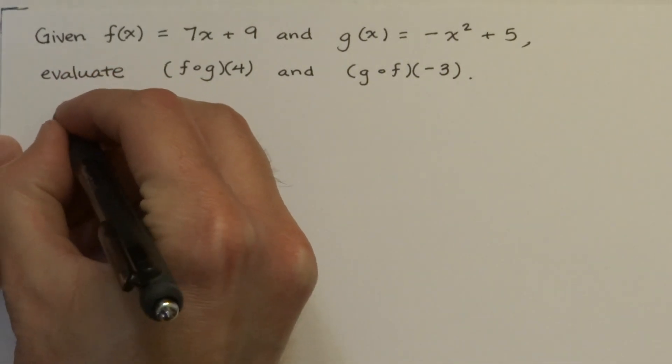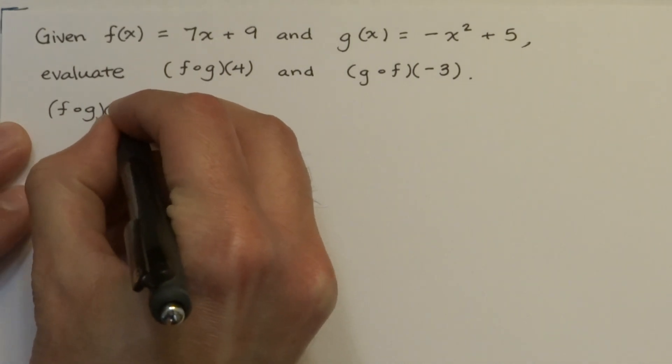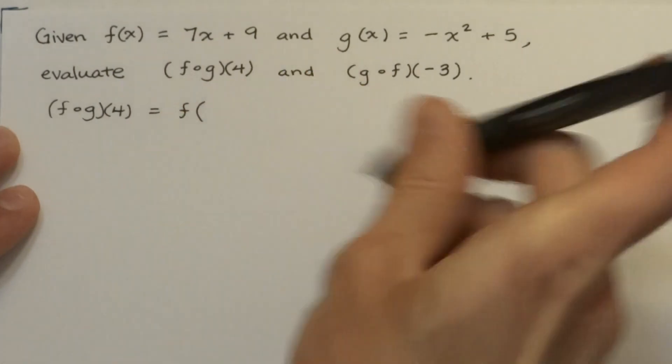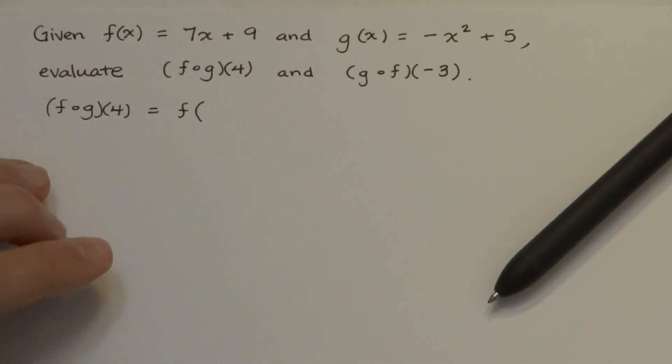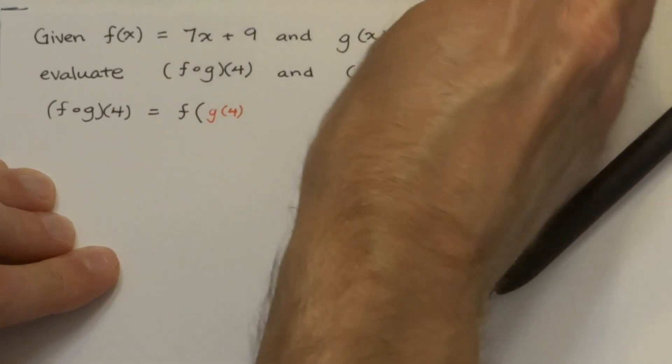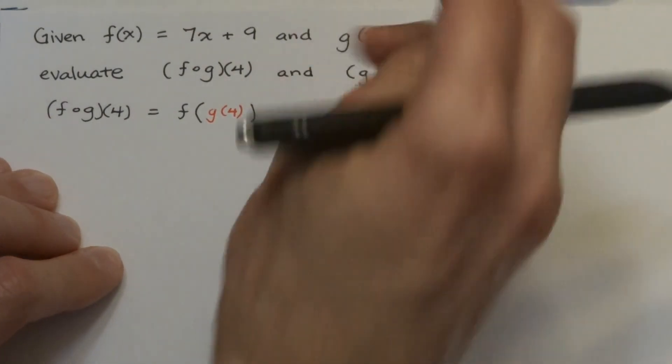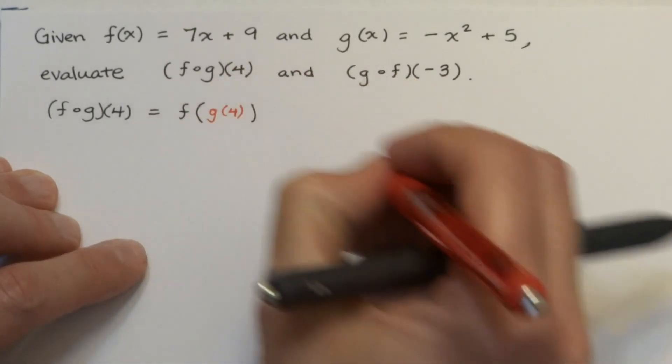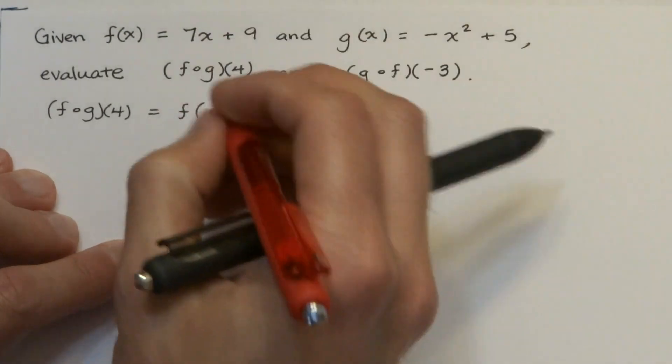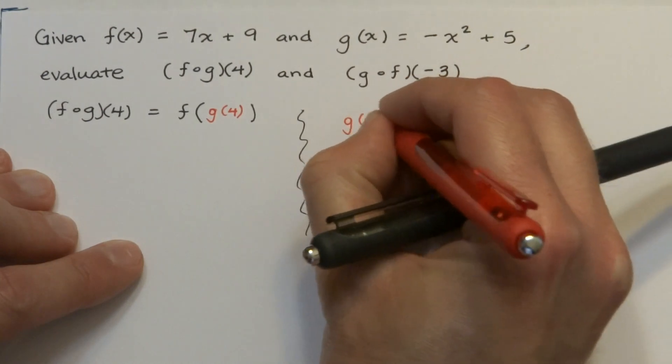So let's do this one at a time. In order for us to evaluate f of g of 4, we need to make sure that we understand this means to do f of, f of g of 4. So here we need to make sure that we do the evaluation of g of 4 first, and the best thing here is to just do this off to the side. Don't clutter up your work, your main work over here, when you're just trying to evaluate g of 4. So we're going to do this off to the side.